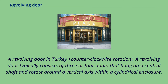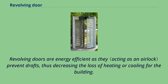A revolving door in Turkey. A revolving door typically consists of three or four doors that hang on a central shaft and rotate around a vertical axis within a cylindrical enclosure. Revolving doors are energy efficient as they prevent drafts, thus decreasing the loss of heating or cooling for the building.